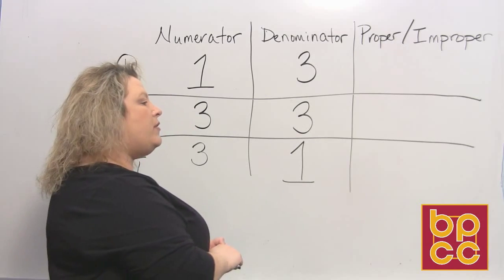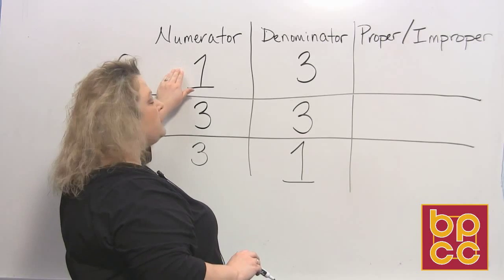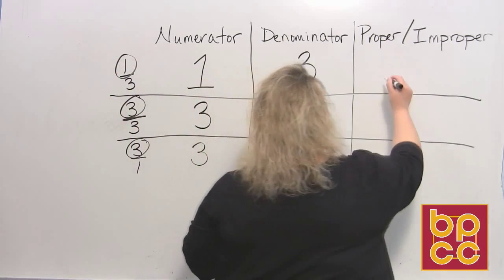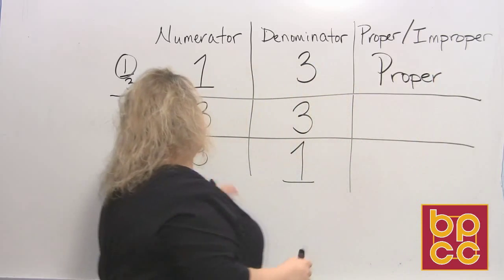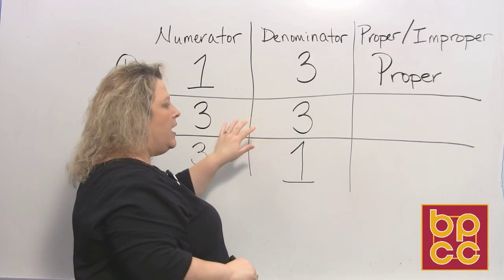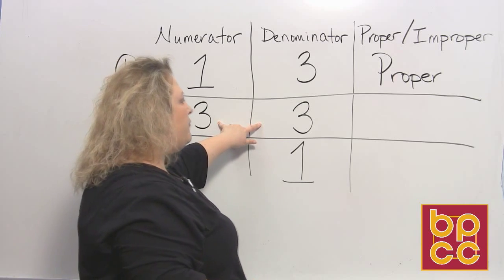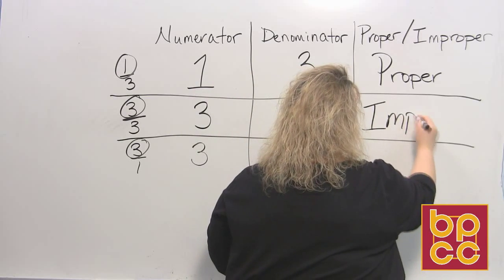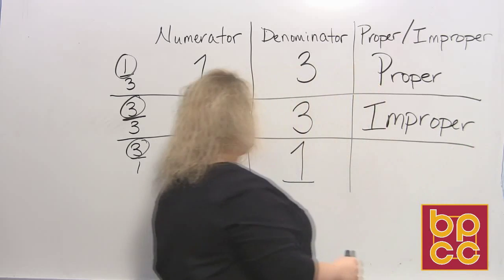Now, to determine whether it's proper or improper, you look at the numerator. If the numerator is smaller than the denominator, then it is a proper fraction. So we would write proper. When I look at the second fraction, you'll notice that the numerator and the denominator are equal to each other. When you have that case, it is not in lowest terms. So three over three is improper because it is equal to or greater than the denominator.